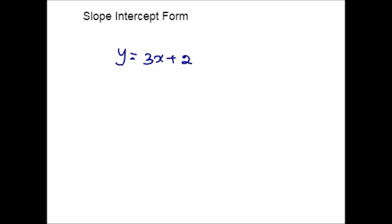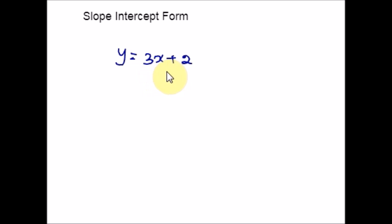Remember that the y-intercept is where the graph crosses the y-axis. The x-coordinate of every point on the y-axis is always 0. So the y-intercept is always (0, b). Here, 3 is the slope and 2 is the y-intercept. The y-intercept is 2, meaning it should cross the y-axis 2 units up from the origin. We also know the slope is positive 3, so the line will go up to the right. Since 3 is the same as 3 over 1, it means it should go 3 units up and 1 unit over to the right. Remember that slope is rise over run.